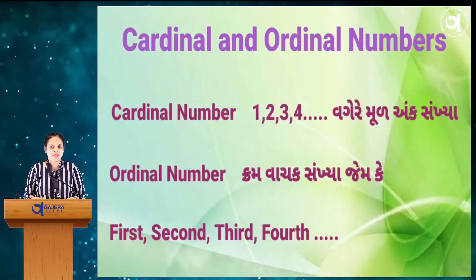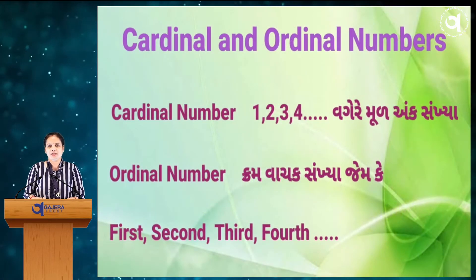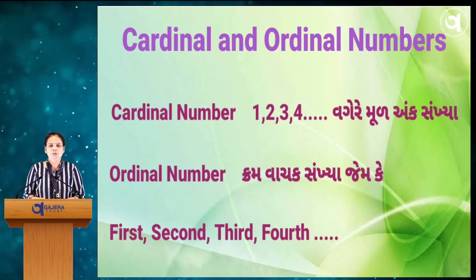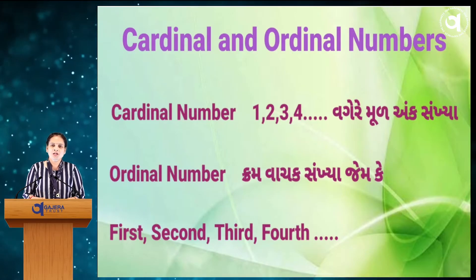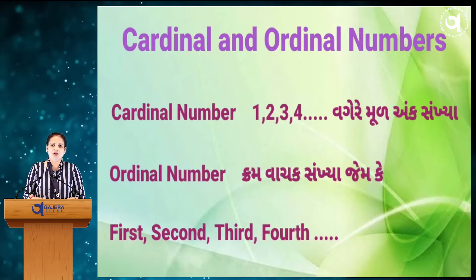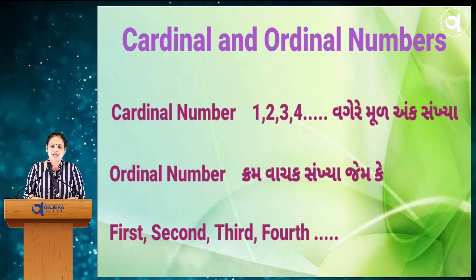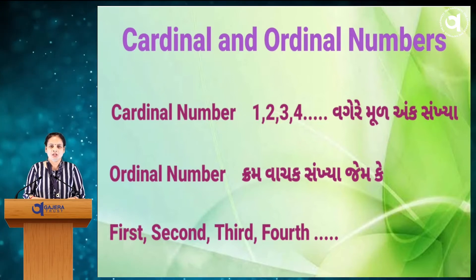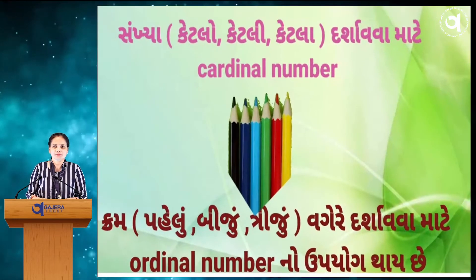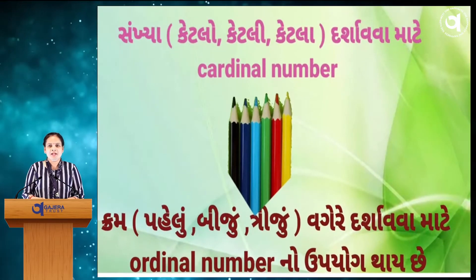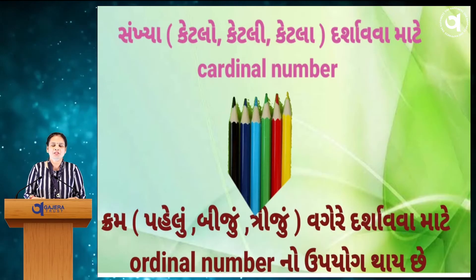Cardinal number means muda angh sankhya jemke 1, 2, 3, 4. Ordinal number means kramh wachag sankhya jemke 1, 2, 3, 4. Cardinal number means sankhya dharasawa matoe jemke vidyathi mithro.